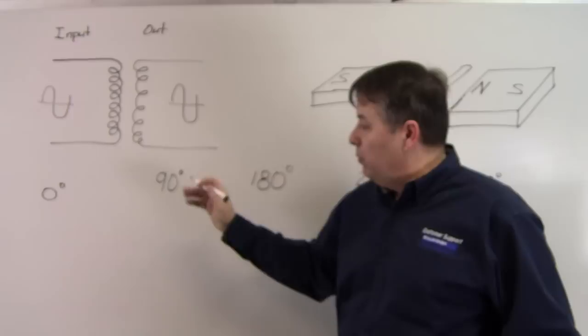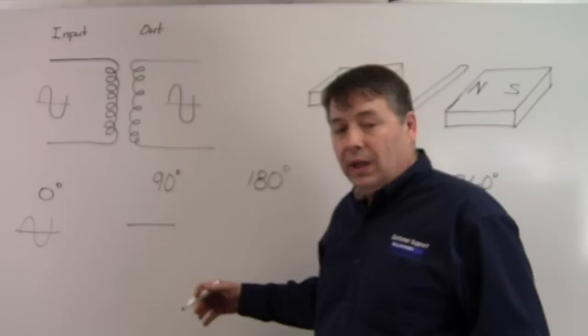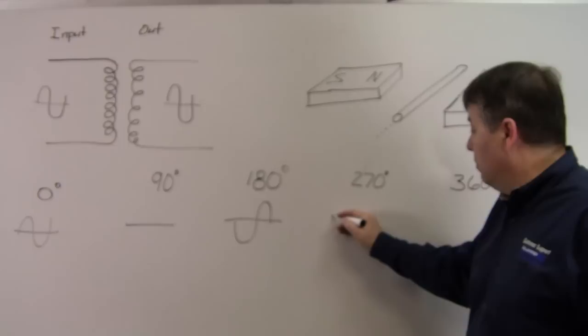So if we take our secondary and we begin rotating it, starting at 0 degrees all the way back to 360 degrees, we'll see that our signal, as we begin rotating it, is going to drop and at 90 degrees we'll be at 0. As we continue rotating from 90 degrees to 180, we're going to see our signal come back, but we'll notice that it's out of phase.